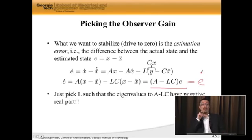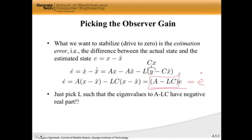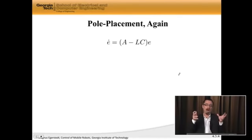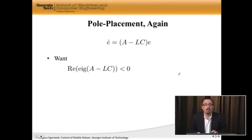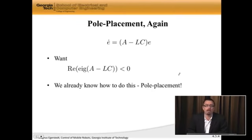So what we need to do now, of course, is pick L in such a way that the eigenvalues to this matrix, A minus LC, have negative real part. Because if we've done that, we've stabilized the estimation error. And I wonder, I wonder how we should go about doing that. Actually, I don't wonder. We know how to do it. Pole placement. We know how to do control design. This looks just like control design, but it's actually observer design.